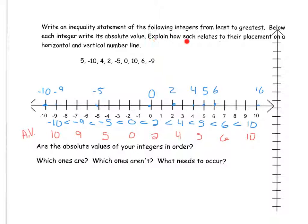Now, explain how each relates to its placement on the horizontal and vertical number line. Well, the absolute values would not be—so it says, are they in order? No, because here's 10. 10 would now be on this side. So, if you have a negative number and you take its absolute value, it switches sides. So if we were plotting that 10, it would be over here.